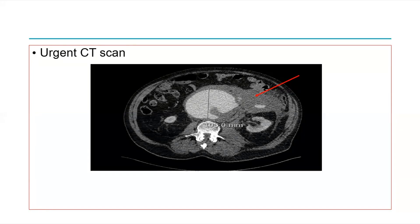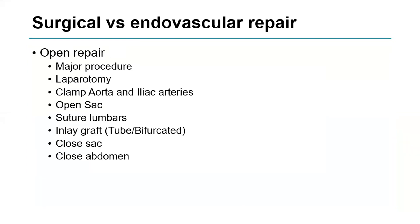If the patient is suitable for surgical intervention, there are two options. Open repair is a major procedure requiring general anaesthetic, laparotomy, and cross-clamping of the aorta and iliac arteries. Clamping and declamping the aorta is the most critical and dangerous part of the operation, as haemodynamic changes place increased strain on the heart. You then open the sac, oversew the lumbars, insert a tube graft or bifurcated graft, and close. It sounds straightforward, but it's not.